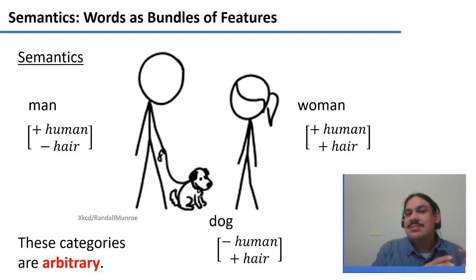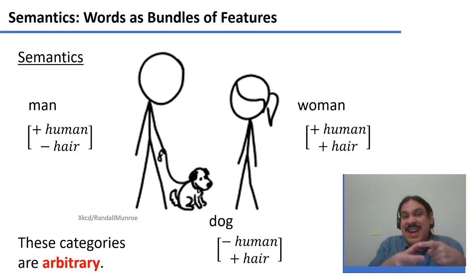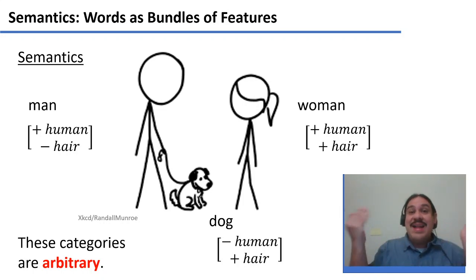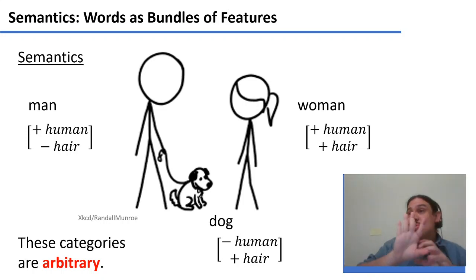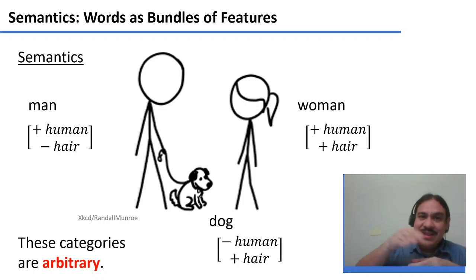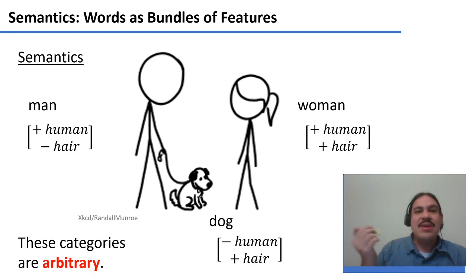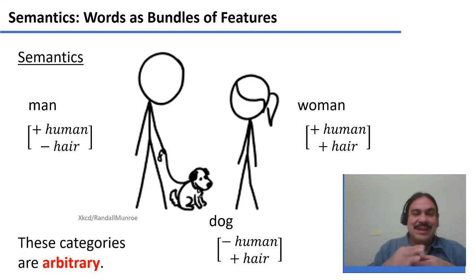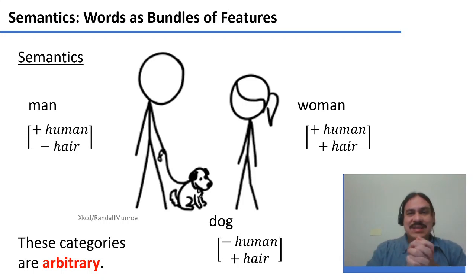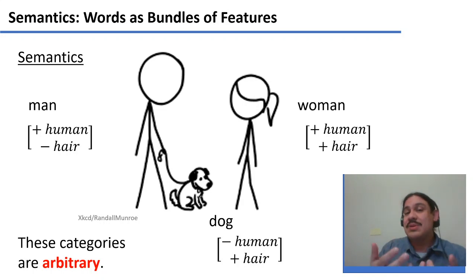One short comment we will return to: anytime we have a binary feature, or in general an N-ary feature, we are forcing reality into these categories. When we do that, we are either leaving chunks of reality out or forcing chunks of reality into categories, making phenomena that are not neatly in these categories invisible or dissimulated. We will later criticize these kinds of binary systems, but for now let's see if they can help us with the current problem.